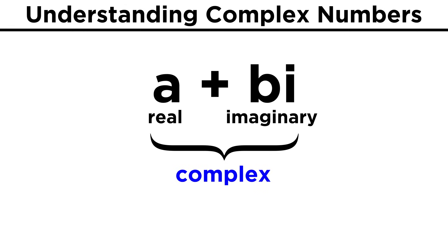Any time we have imaginary numbers together with real numbers, they are called complex numbers, and we write them in the form a plus bi. Complex numbers have a real part, that's the a, and then an imaginary part, which is bi.